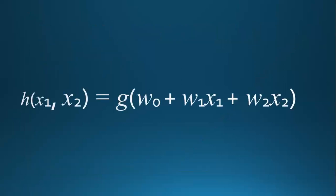In short, each of these activation functions can be thought of as a function that gets applied to the result of all of the computation. We take some function G and apply it to the result of all of that calculation. This is the way of defining a hypothesis function that takes inputs, computes some linear combination of those inputs, and then passes it through some sort of activation function to get an output.